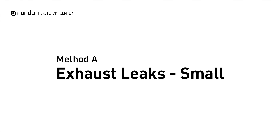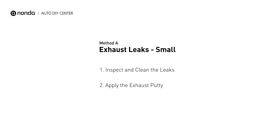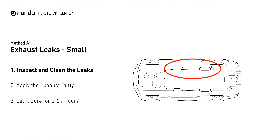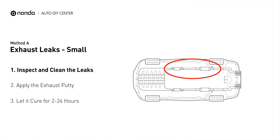Method A: Exhaust Leaks. The exhaust system begins at the engine combustion chambers and runs along the undercarriage of the vehicle, eventually ending with a visible tailpipe.